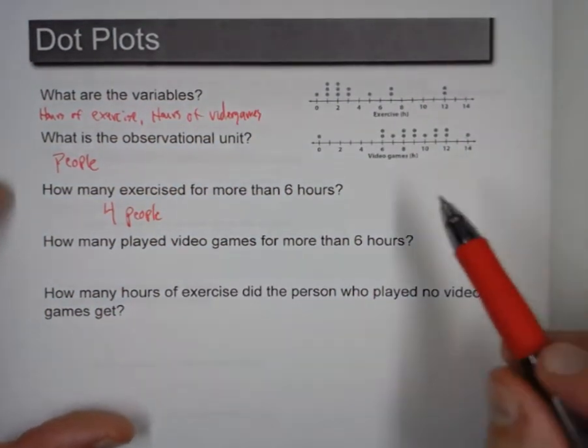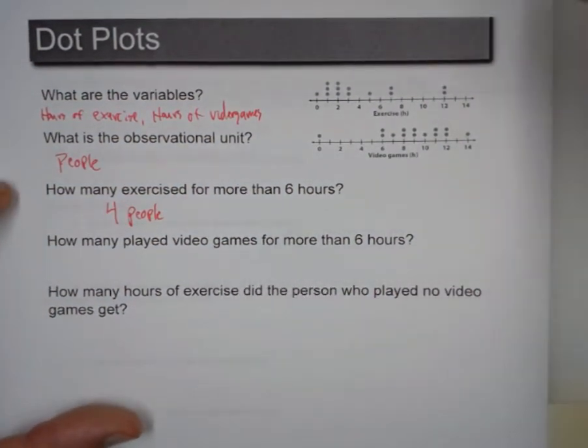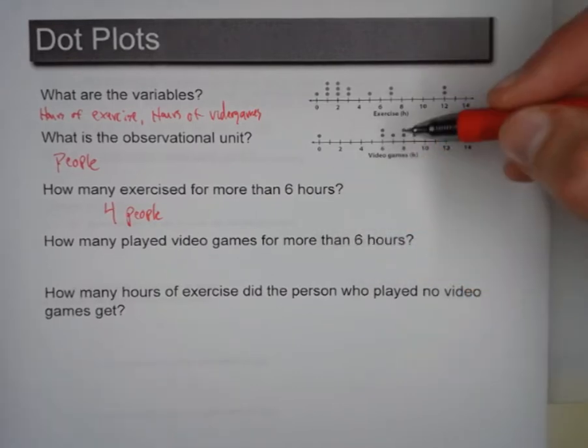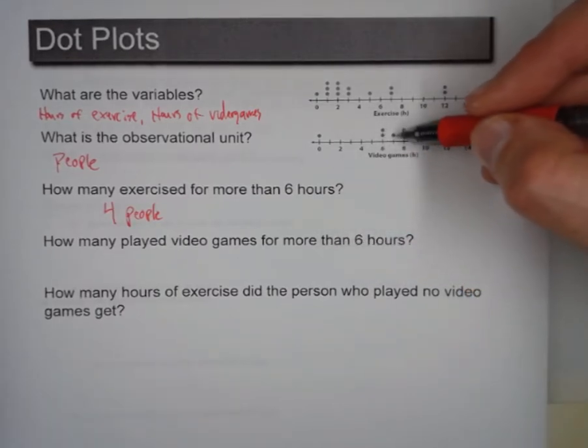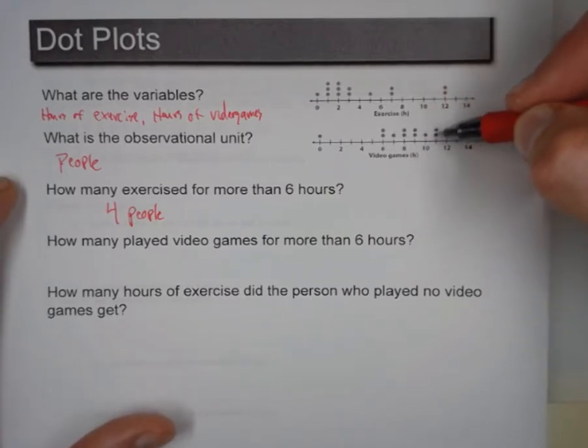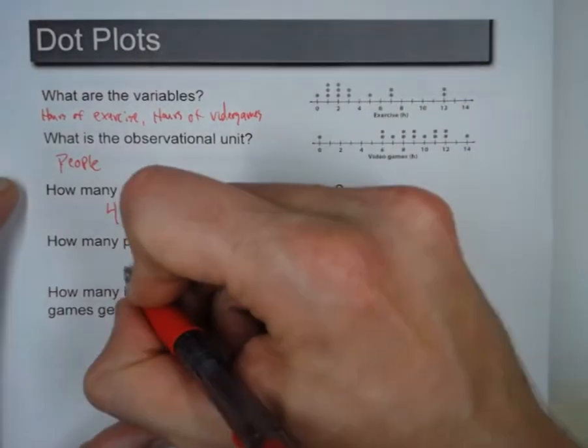The next one, how many played video games for more than six hours? Now, when it says more than, that means not including six. So that means we don't count these two. So we start here at seven. One, two, three, four, five, six, seven, eight, nine, ten, eleven people.